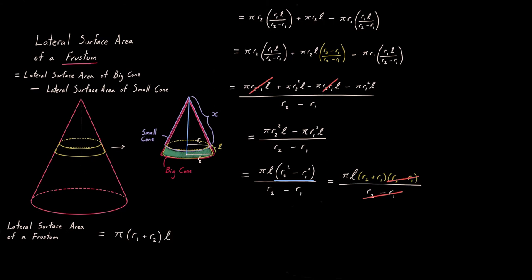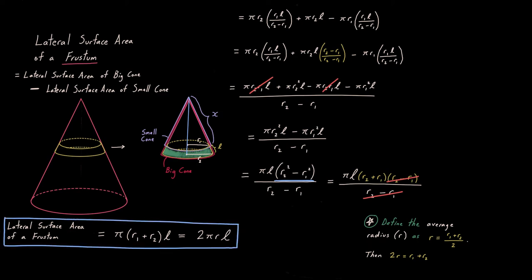That's a common way the lateral surface area of a frustum is expressed, but a more common way is like so, especially in calculus. Let's define the average radius, lowercase r, as just R1 plus R2 over 2, just averaging the top radii and the bottom radii. So then 2R is going to be R1 plus R2. In other words, lateral surface area of a frustum is 2 times π times R times script L. So again, be careful here, lowercase r is the average radius. 2πRL, 2πRL, that is what I'm going to utilize heavily in this next little section.